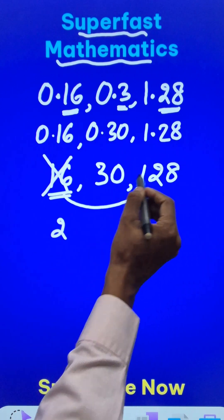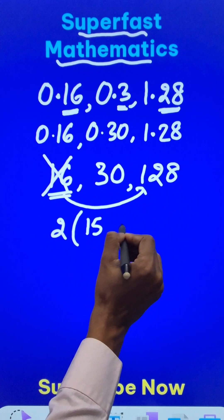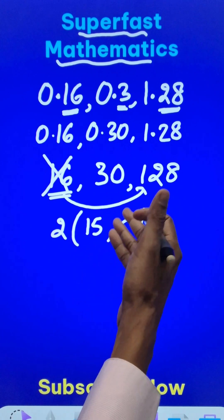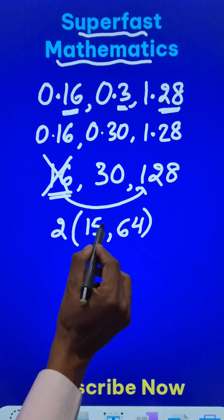Now between them, they have a common factor 2 which gives me 15 here and 64 here. 15 is 3 into 5 and 64 is like 2 into 2 into 2 six times, so all 2s here and 3 into 5 here.